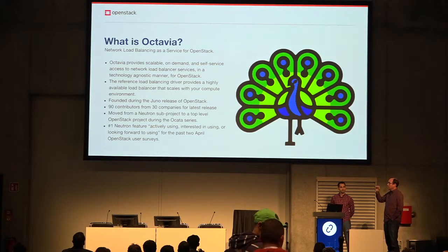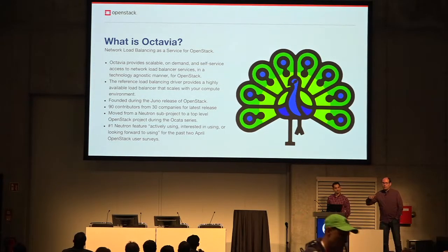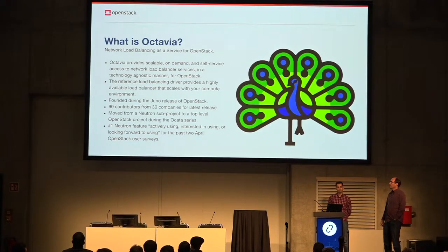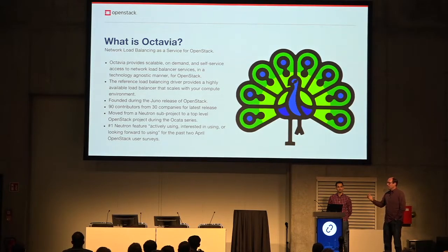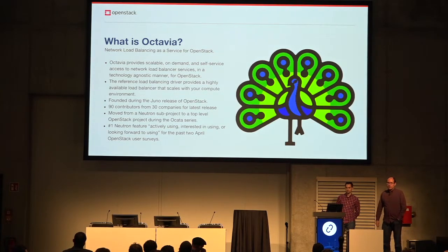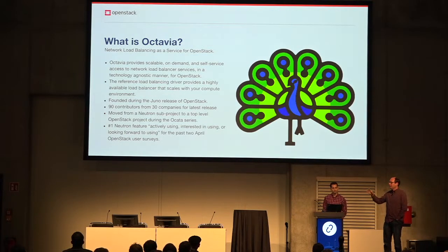We have 90 contributors from over 30 companies, and it's becoming more every cycle. Octavia used to be a Neutron sub-project — that's why there's a Neutron LBaaS — and then we moved out of that and became our own top-level project. During this move, we had to think about how to eventually migrate people from Neutron LBaaS into Octavia. We've also always been the number-one Neutron feature.